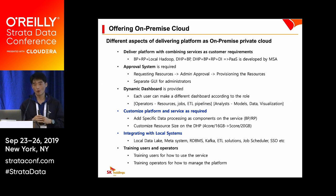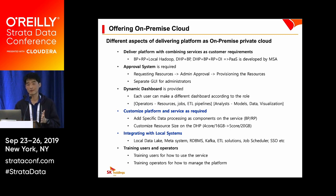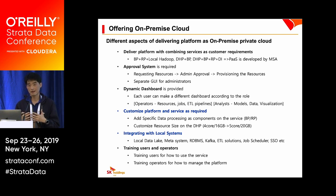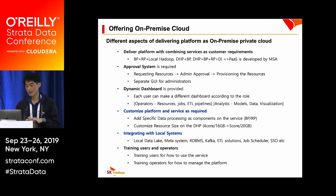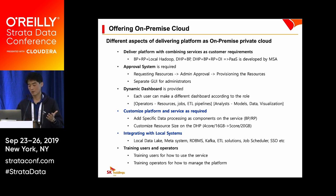We also offer on-premise cloud deployment. When delivering our platform on-premise, we provide many different options compared to the public service. We deliver the platform with only the necessary services combined according to customer requirements — for example, batch pipeline, real-time pipeline, or integration with existing Hadoop clusters inside a sandbox. Some customers ask for DHP and BP only, while others need a full set of services such as DHP, BP, RP, DI, and ML Modeler. This is possible because our platform layer is implemented using microservice architecture.